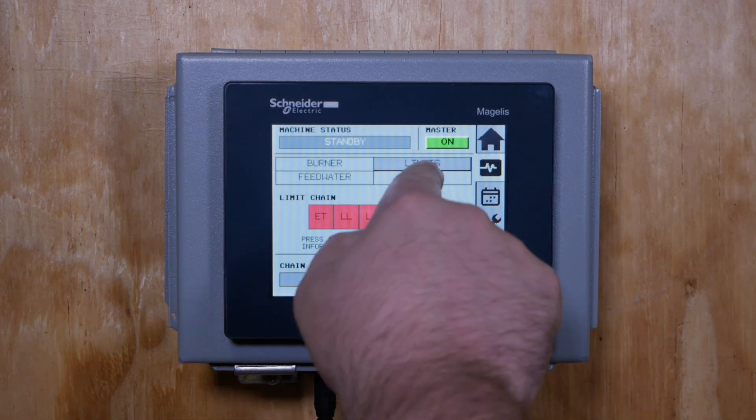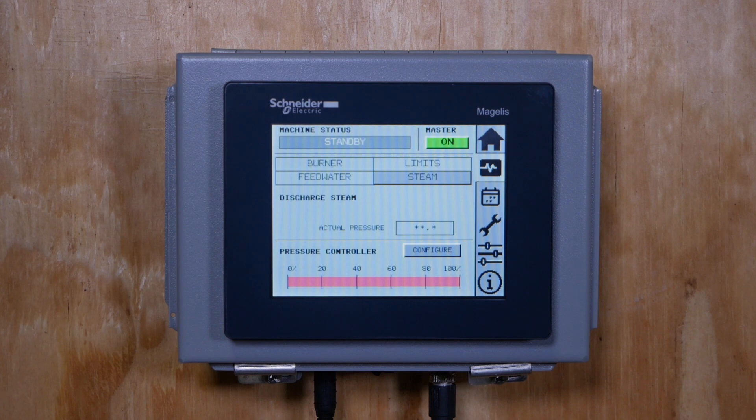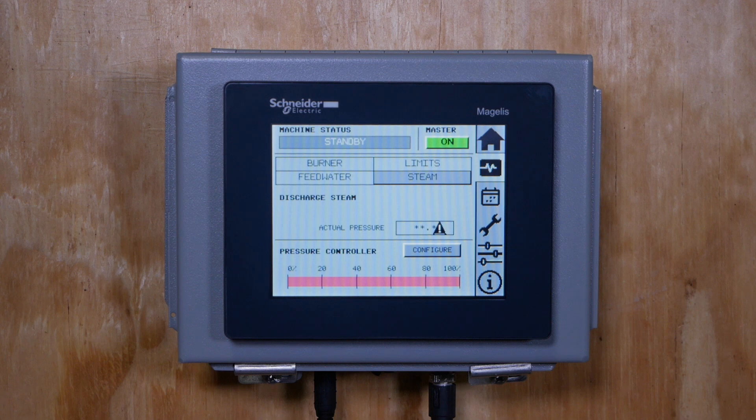The steam page shows the steam output setpoint and actual pressure. The pressure controller graph shows the steam demand. As the steam demand drops, the burner will switch to low fire mode and eventually turn off.